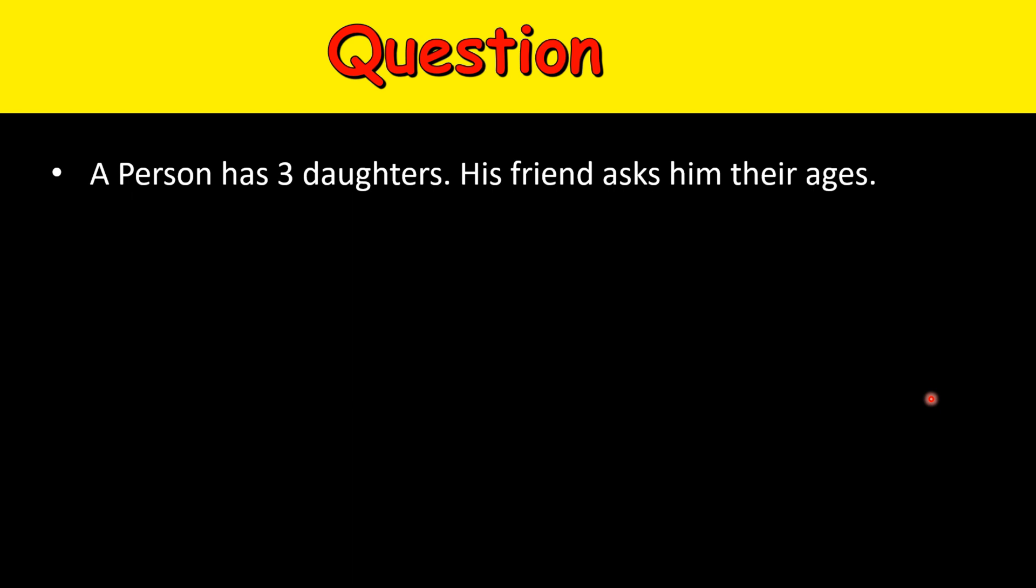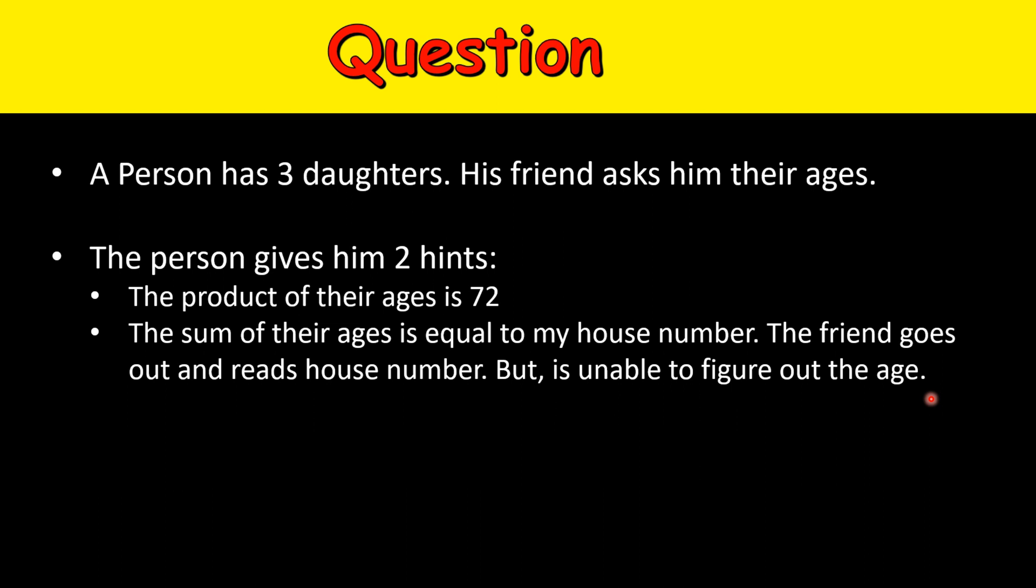The person doesn't directly tell him the answer, but he gives him two hints. The first hint is that the product of their ages is equal to 72, and the second hint is that the sum of their ages is equal to my house number.